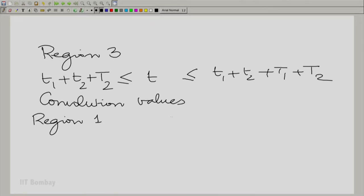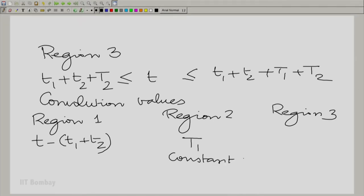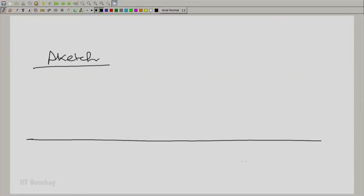The convolution values in region 1, 2, and 3 were as follows. I will just write them down in this horizontal fashion. Here it was T minus T1 plus T2. Here it was a constant at capital T1, and here it was essentially a dying or reducing line. So by sketching this we will get an idea. First the convolution rises, reaches T1, and then goes to the end falling off as a dying line or reducing line there.